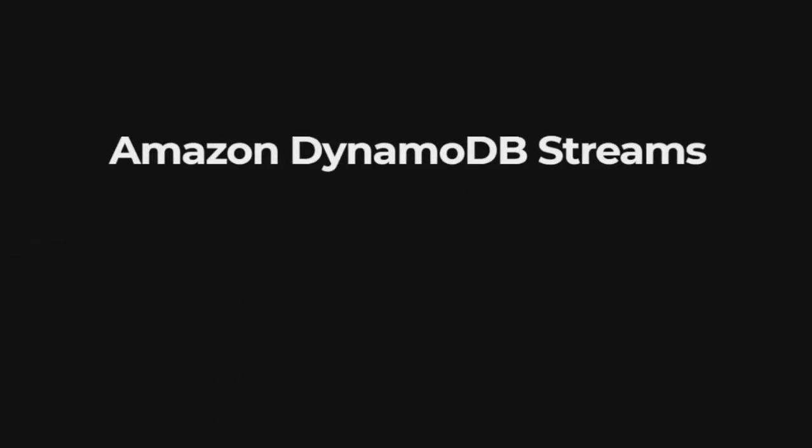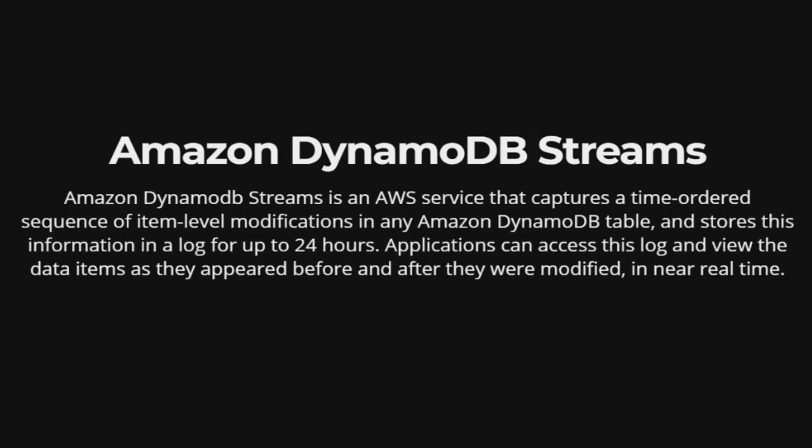Amazon DynamoDB Streams. Amazon DynamoDB Streams is an AWS service that captures a time-ordered sequence of item-level modifications in any Amazon DynamoDB table and stores this information in a log for up to 24 hours. Applications can access this log and view the data items as they appeared before and after they were modified in near real-time.